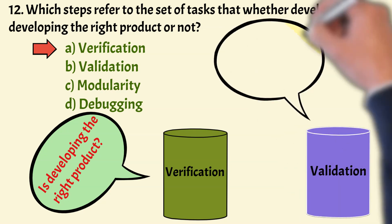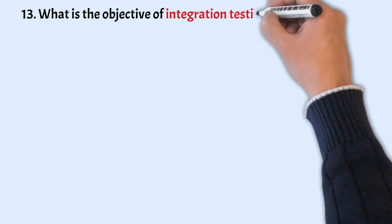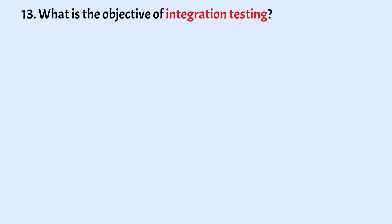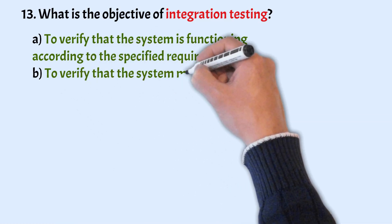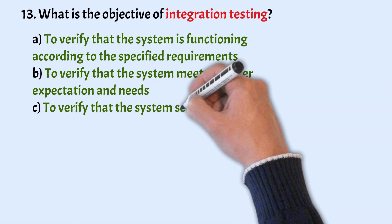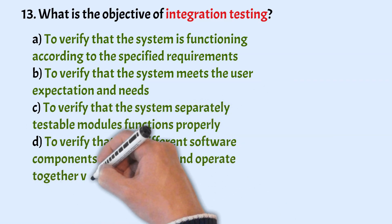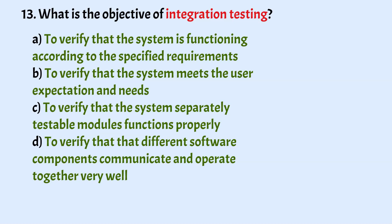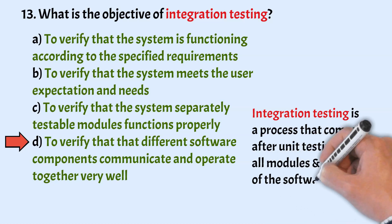Next: What is the objective of Integration Testing? Options: to verify the system functions according to specified requirements; to verify the system meets user expectations; to verify separately testable modules function properly; or to verify that different software components communicate and operate together well. The correct option is Option D. Integration Testing is a process that comes after unit testing, where all modules and components of the software are tested as a group.